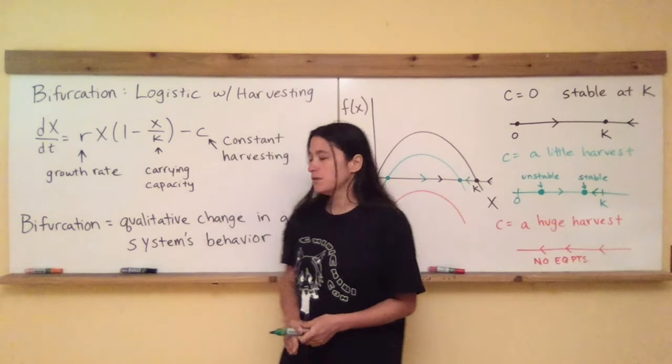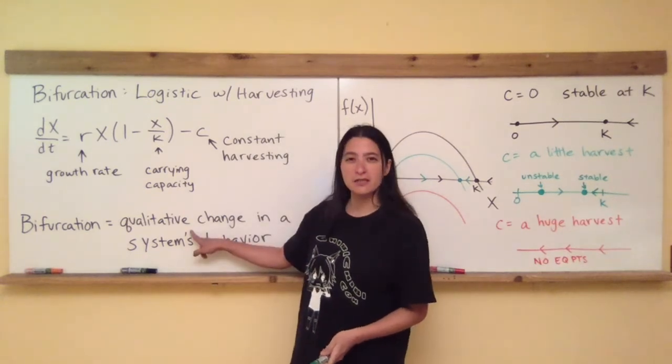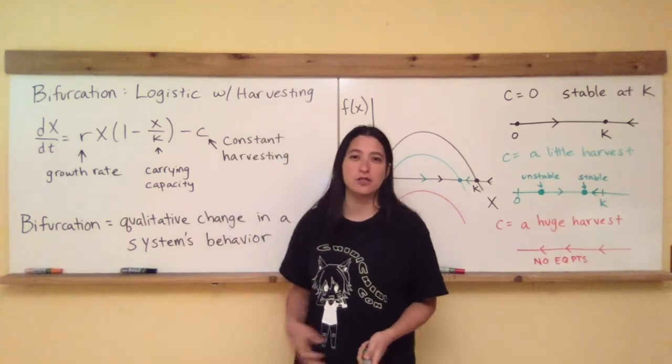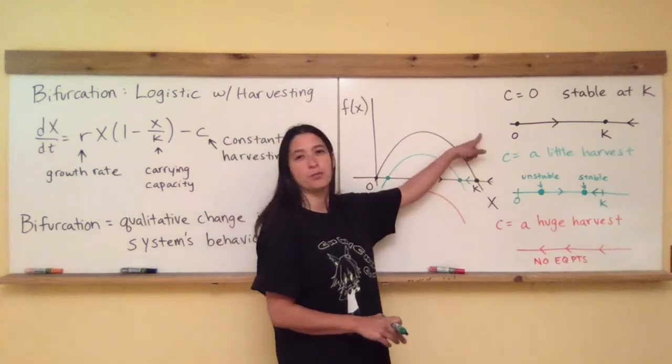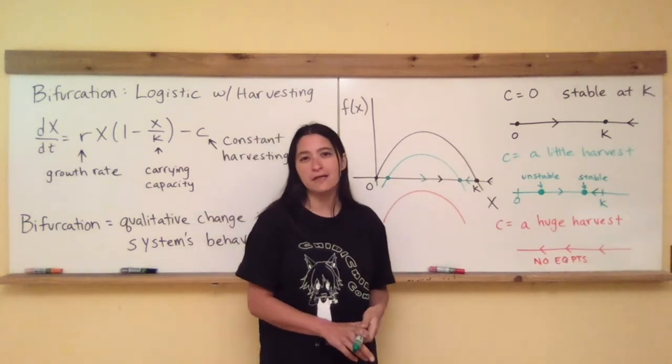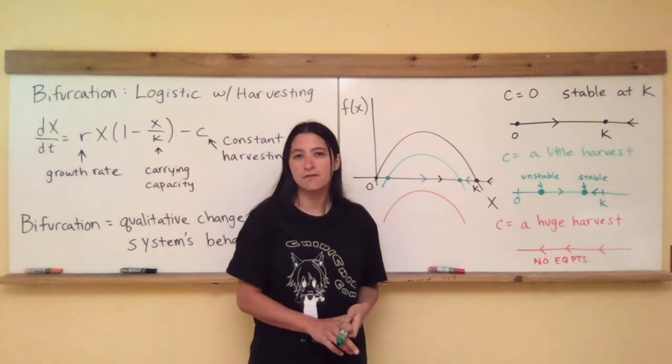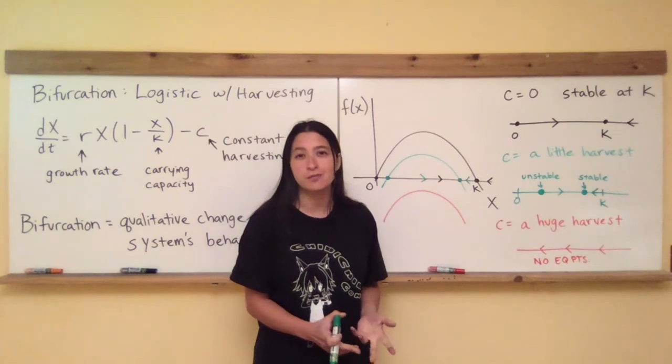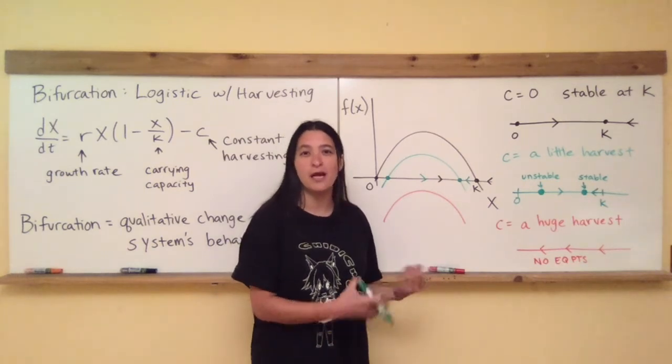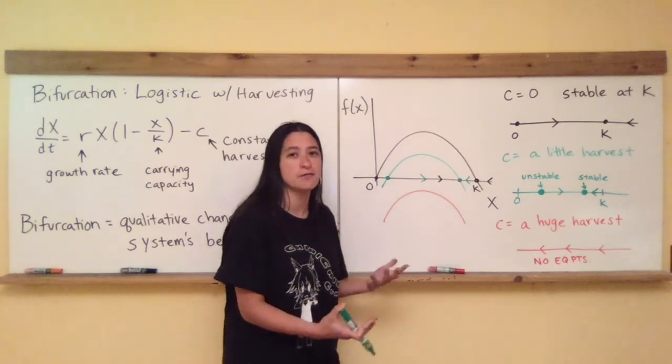Nevertheless, when I talk about the quality, remember the qualitative change, the quality of this graph, the green graph is very similar to the black graph. Basically, if I wanted to describe the quality of this system in either the black or the green cases, I would say it has two fixed points, one that's stable, and then one that's unstable.